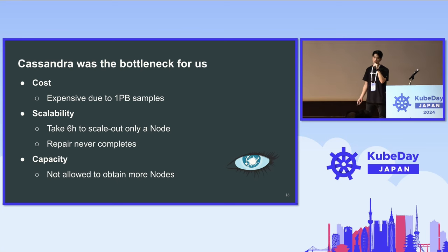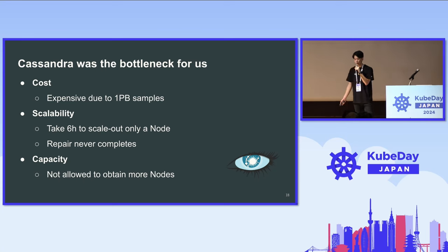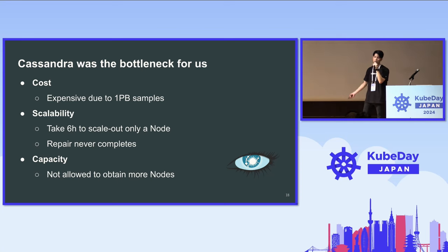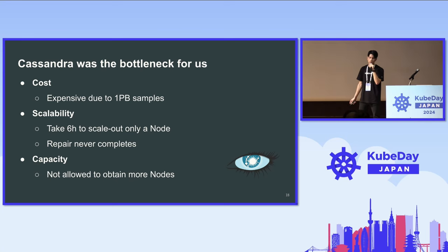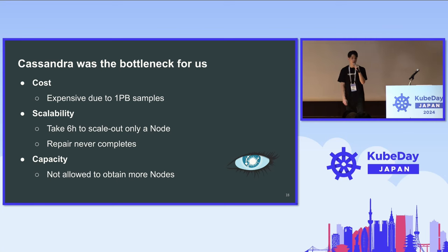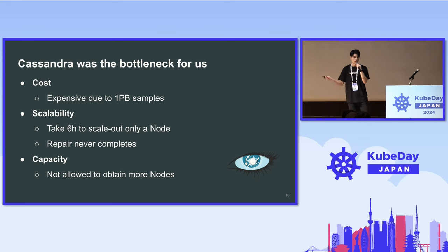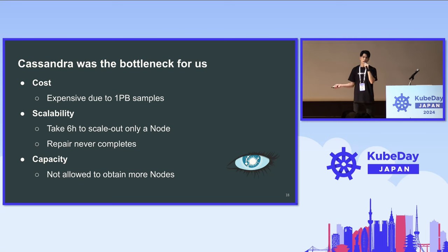We already have 420 nodes in the cluster, so server cost is really expensive due to the petabyte scale of data. For scalability, it takes six hours to scale out even a single node due to the petabyte scale. And Cassandra's repair command to detect and fix data corruption — our repair commands for the cluster never complete due to the data size.